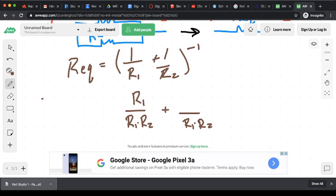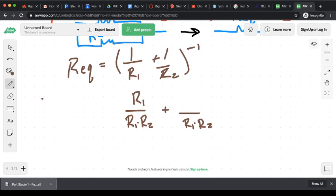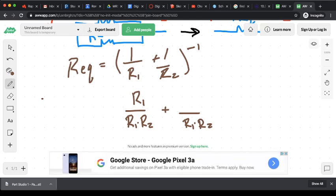Same thing over here. I got R2 on the bottom of the fraction, I'm multiplying by R1. Well, in order to keep this fraction the same, I got to multiply the top of the fraction by R1. So one times R1 is just R1, and I've got this all in parentheses with that little negative one symbol, the inverse.